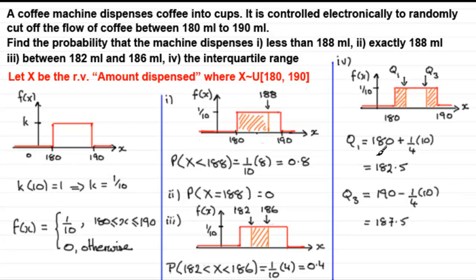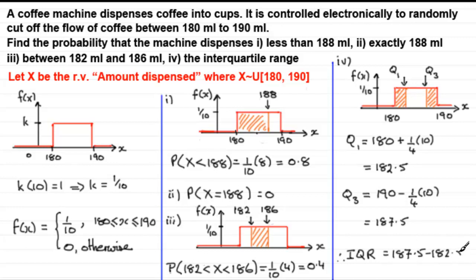So we have the lower quartile Q1 = 182.5 and the upper quartile Q3 = 187.5. Therefore the interquartile range, IQR, equals Q3 minus Q1, which is 187.5 minus 182.5 = 5. If you were asked to find the median — not that we are — it would be right in the middle at 185.